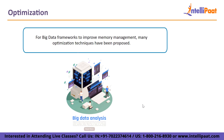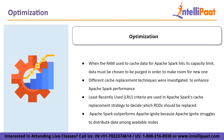Another issue with data processing is data localization — data are physically dispersed among several cloud regions and racks, and to be processed, data must be close to where computation takes place. The application developer must also be familiar with storage APIs including SDFS API, Fuse API, S3 API, and REST API. For big data frameworks, many optimization techniques have been proposed to improve memory management. When the RAM used to cache data for Apache Spark hits the capacity limit, data must be chosen to be purged to make room for new ones. Different cache replacement techniques were investigated to enhance Apache Spark performance, such as the least recently used technique, which is used by Apache Spark's cache replacement strategy to decide which RDD should be replaced.